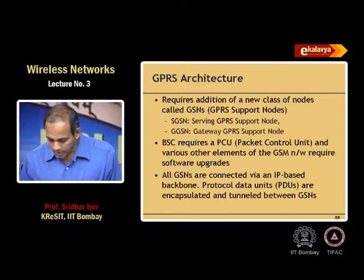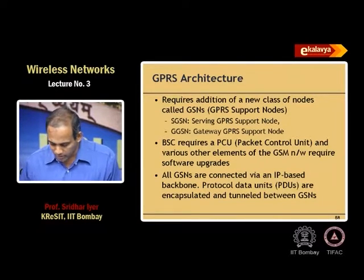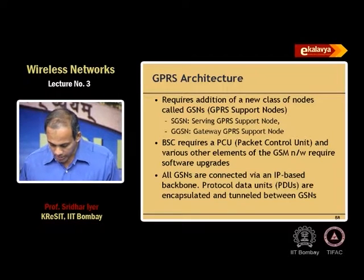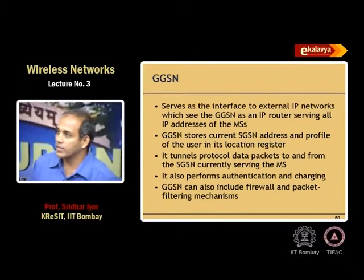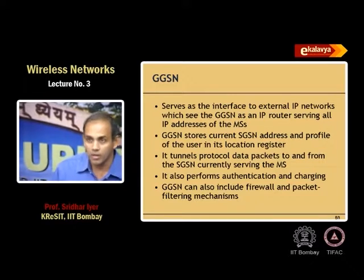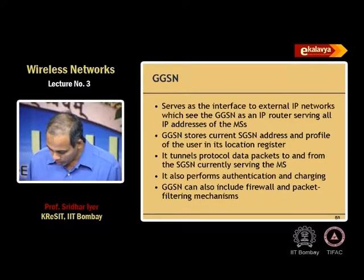GPRS requires the addition of new classes of nodes called GPRS support nodes. The BSC requires something called the Packet Control Unit, and various other elements require upgrades. All GSNs are connected via an IP backbone. The key function of a GPRS network is to connect to an IP network — through a GPRS phone you can access your email on an IP network.